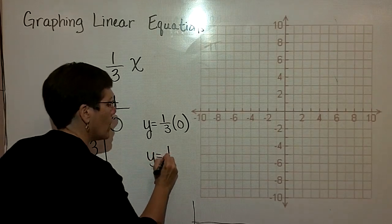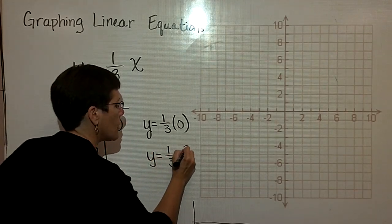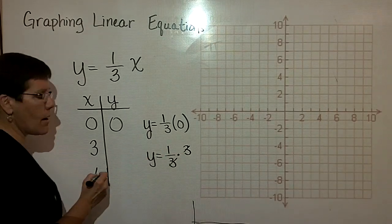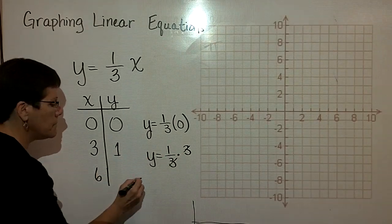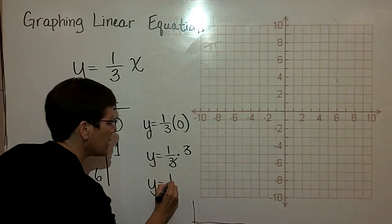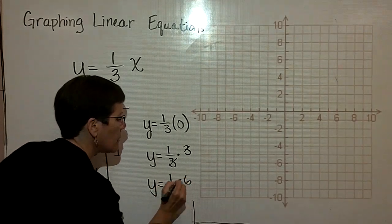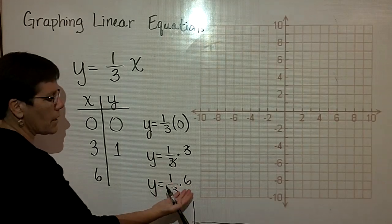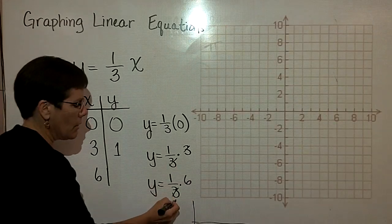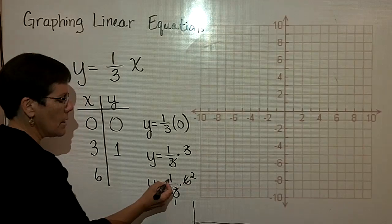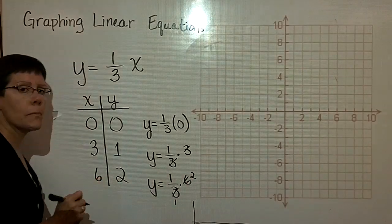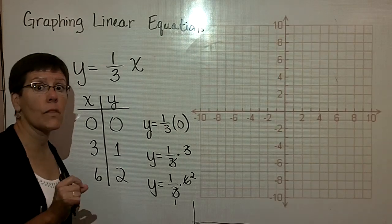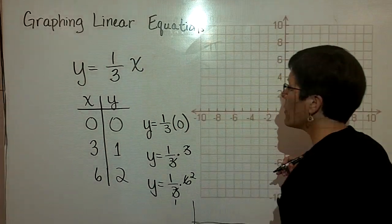When I take 1 third of 3, those cancel out and I have 1. And when I take 1 third of 6, I'm multiplying by 6, putting that value in for x. Keep it up high, it's in the numerator. 3 goes into here once and into here twice. And 1 times 2 is 2. It is so much easier to take multiples of the denominators so that they reduce quickly.